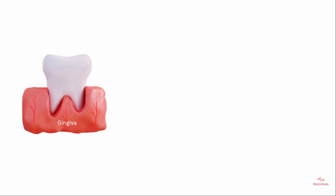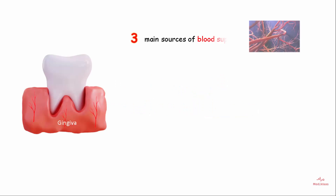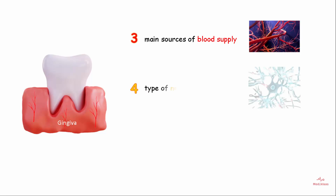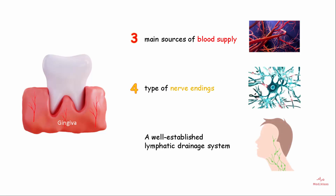Did you know that the gingiva has three main sources of blood supply, four types of nerve structures, and a well-established lymphatic system? So let's understand this in detail.